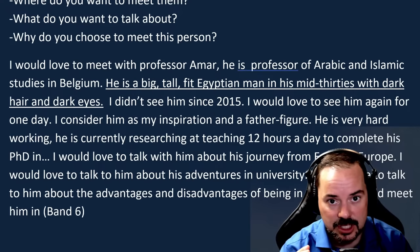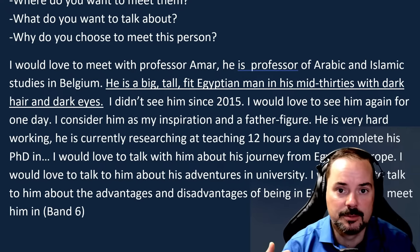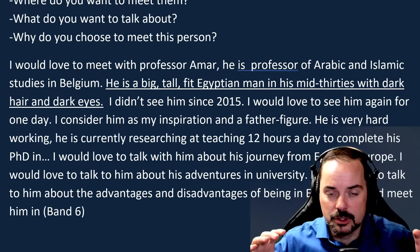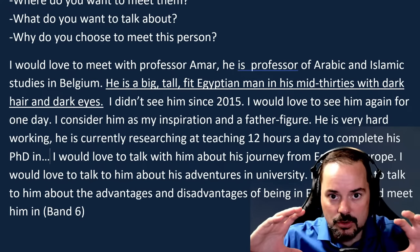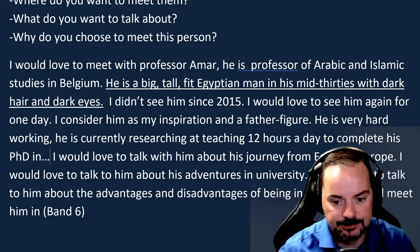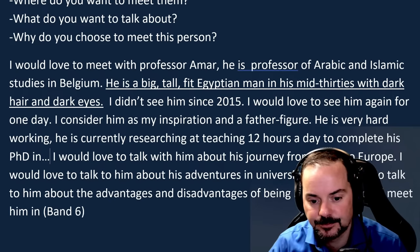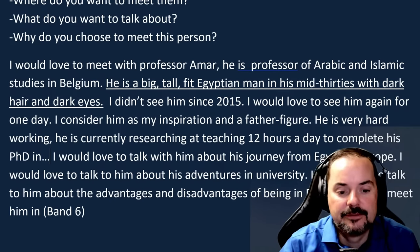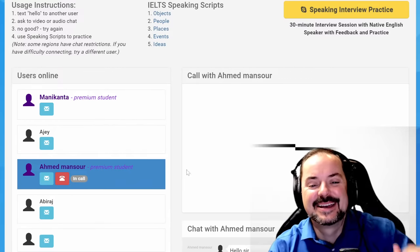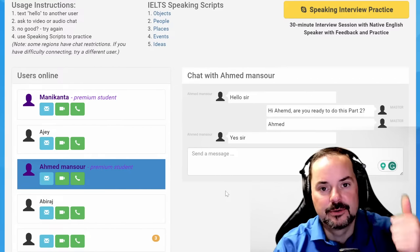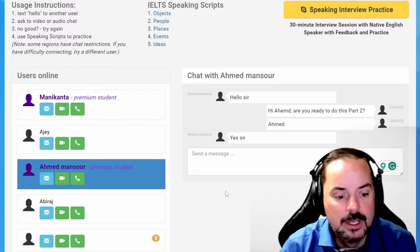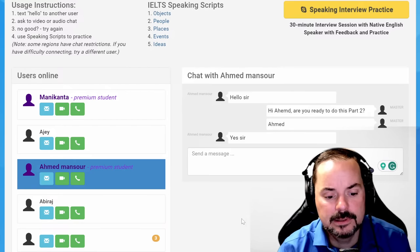Those details and backing up personality with actions bring the answer to band nine level. That's the difference — and that's all you need to do. When you talk about a person, think: personality plus action, personality plus action. Those are the missing pieces, Ahmed. You have a really good idea and you're answering the cue card — add in those details and you're going to get a band seven for sure. Say it faster and you'll get a band nine. Keep up the good studies.